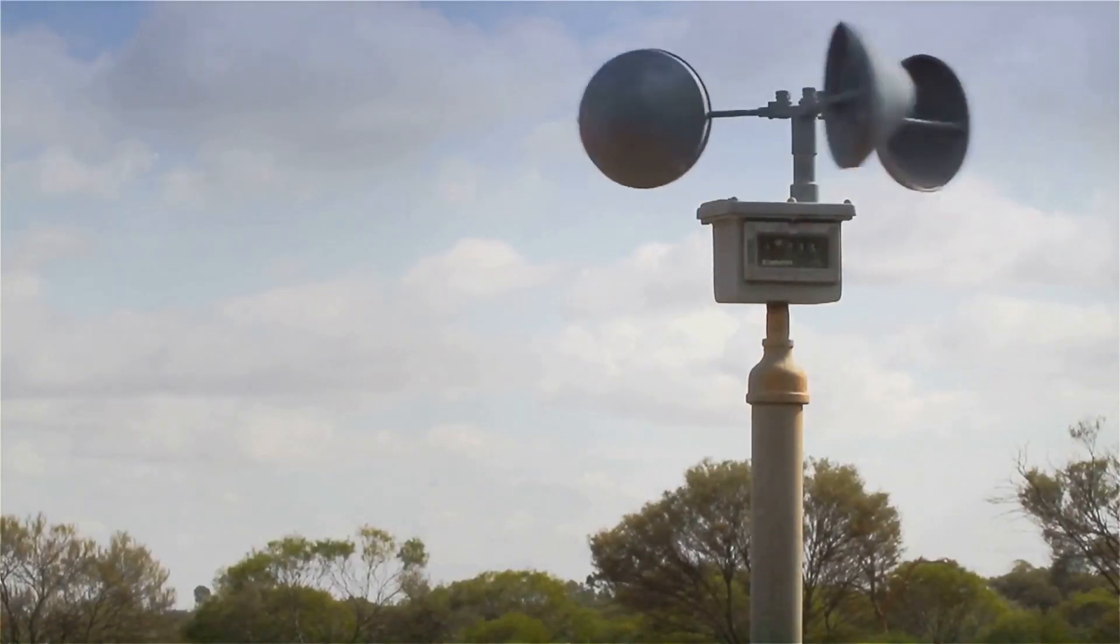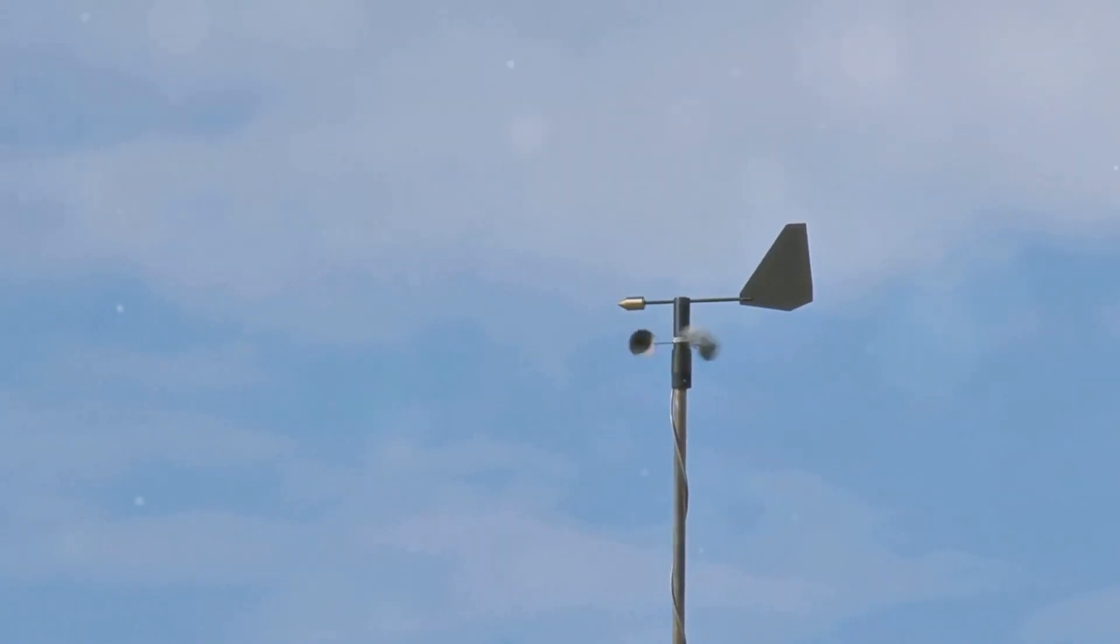The anemometer measures wind speed and direction. It has little cups that spin in the wind to calculate how fast the wind is blowing.